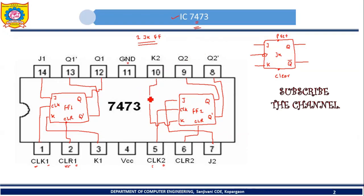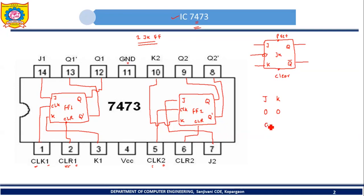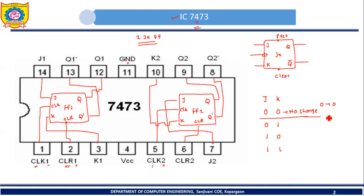Now let's understand the operation of JK flip-flop. There are four possibilities. J and K both are 0: there is no change in state — if the present state is 0, the next state will be 0; if the present state is 1, the next state will be 1. If J is 0 and K is 1, it is called the reset condition — the flip-flop resets to 0 regardless of the present state.